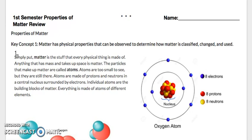Our key concept number one is matter has physical properties that can be observed to determine how matter is classified, changed, and used. Simply put, matter is the stuff that every physical thing is made of. Anything that has mass and takes up space is matter. The particles that make up matter are called atoms. Atoms are too small to see, but they are still there. Atoms are made of protons and neutrons in the central nucleus surrounded by electrons. Individual atoms are the building blocks of matter. Everything is made of atoms of different elements. You can see here, this is just a model.